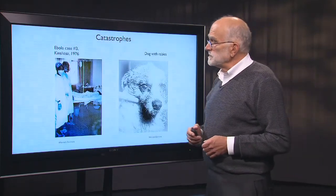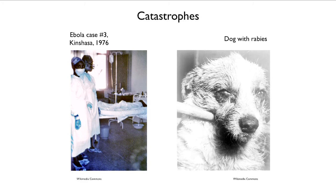Here are some catastrophes. This is a photo from the hospital in Kinshasa of case number 3 in the Ebola outbreak in 1976 — that patient is very probably going to die, and the outbreak actually killed many of the medical personnel helping care for the patients. And here is a dog with rabies, clenching its mouth down on a stick, weeping virus out of its eyes and in its saliva, highly motivated to bite other potential hosts. The rabies virus goes into the brain and changes behavior to increase transmission probability.